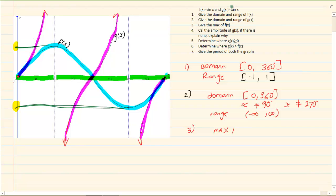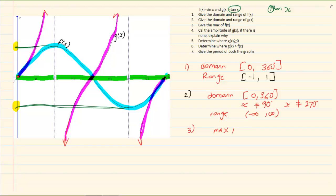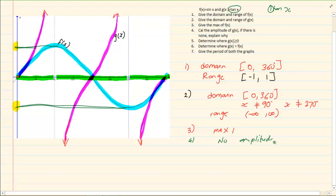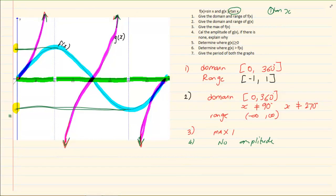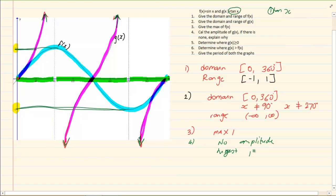For g of x, even though the number in front is 1, that method only works for sin and cos. For a tan graph it goes on forever at the top and bottom, so there is no amplitude. You cannot identify the highest point because the graph goes up to infinity — arrows show it never stops. There is no maximum, and therefore there is no amplitude.